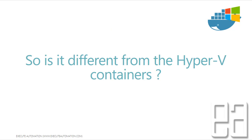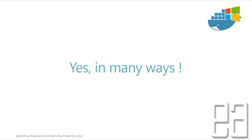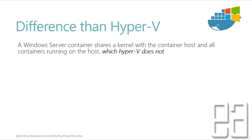So is it different from Hyper-V containers? Yes, in many ways. The difference is that the Windows Server container shares a kernel with the container host and all containers running on the host, which Hyper-V does not. If you remember from our previous videos, we were looking at the daemon process — it was a Windows Hyper-V service running, and every time you spin up a process within a Hyper-V container, you cannot see the actual process running on your host machine because the kernel is completely different.